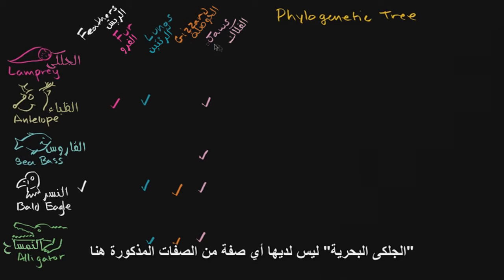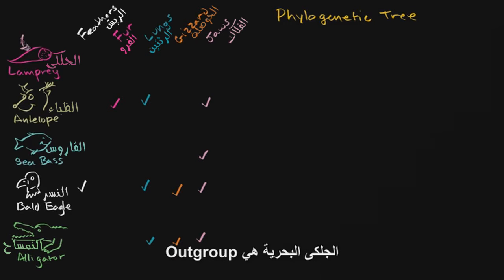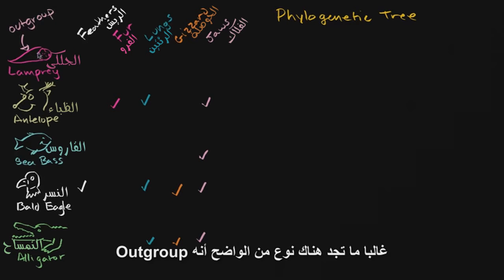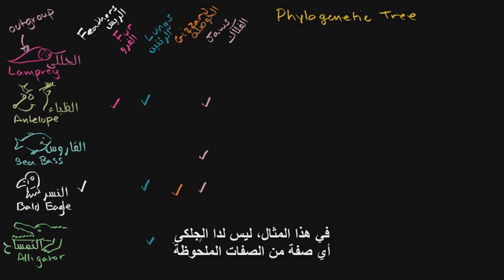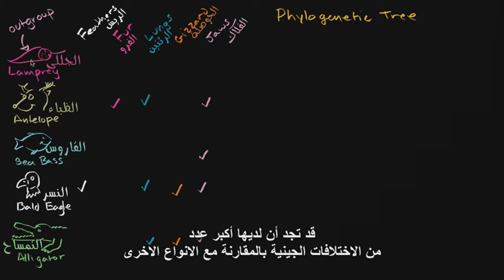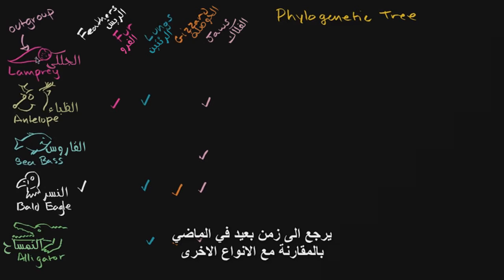The lamprey does not have any of these five traits that we are observing, so this we would call the out-group. The lamprey is the out-group. When constructing a phylogenetic tree, they might provide you something that is clearly an out-group — here it doesn't have any of these observable traits. Sometimes, if we're looking at genetic differences, it might have the largest number of genetic differences relative to everything else. So the simplest hypothesis is that its common ancestor is most distant into the past.